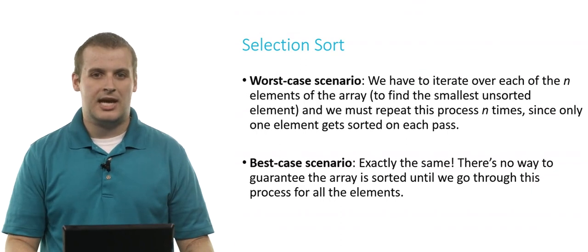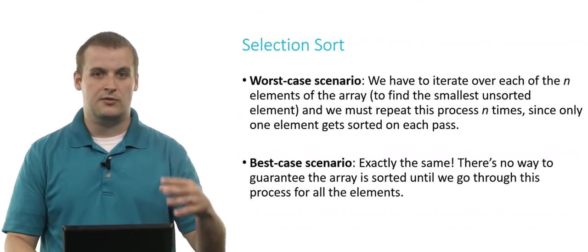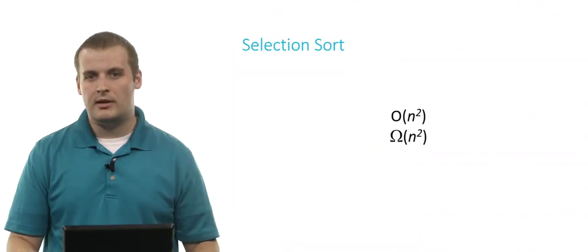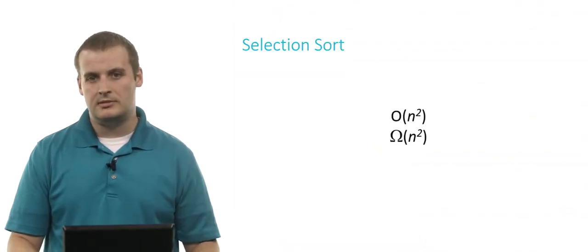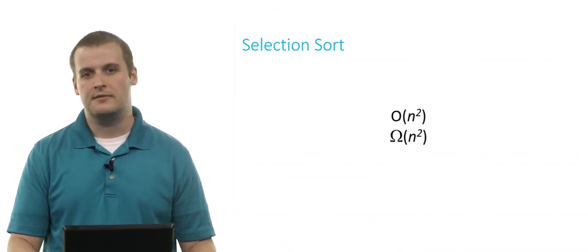So the worst case runtime, we have to repeat a process n times, once for each of n elements. And the best case scenario, we have to do the same. So thinking back to our computational complexity toolbox, what do you think is the worst case runtime for selection sort? And what do you think is the best case runtime? Did you guess big O of n squared and big omega of n squared? You'd be right. Those are, in fact, the worst case and best case runtimes for selection sort.